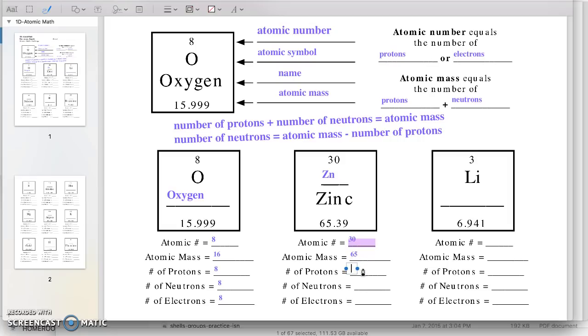The number of protons is the same as the atomic number. That's equal to 30. The number of electrons is going to match the number of protons and match the atomic number. That's 30. The number of neutrons is going to be the atomic mass minus the number of protons. So we're going to have 65 minus 30, which equals 35. And that's zinc.